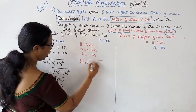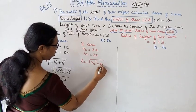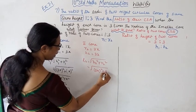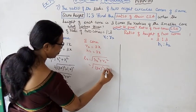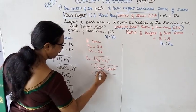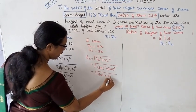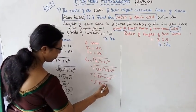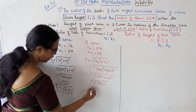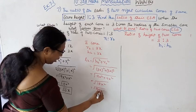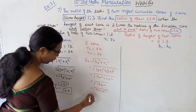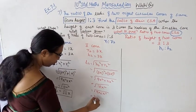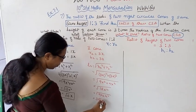L2 is equal to the square root of H2 squared plus R2 squared. H2 is 3x, so H2 squared is 9x squared. R2 is 3x, so R2 squared is 9x squared. That gives root of 9x² plus 9x² equals root of 18x squared. The square root of 9 is 3, and square root of x squared is x, so L2 equals 3√2 · x.